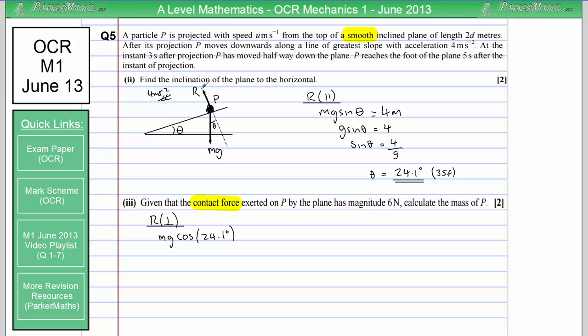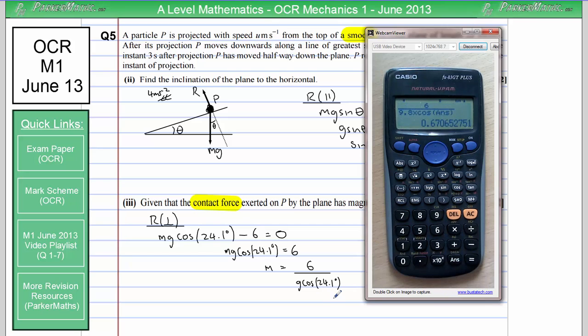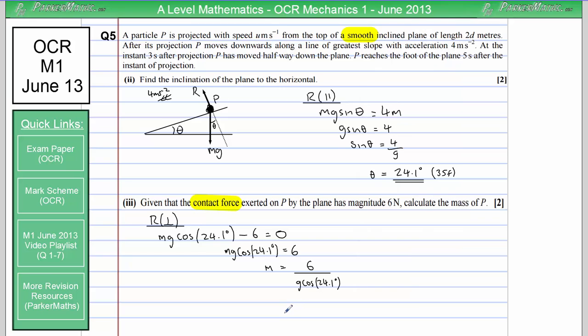We know this normal contact force R coming out of the slope is 6 so that's going to be minus 6 and we know that's going to be 0 because there's no acceleration perpendicular to the slope. The acceleration is down the slope. So from here we can do a little bit of rearranging and say that m g cos of 24.1 is 6 and if we divide through by g cos 24.1 we get m equals 6 over g cos 24.1 degrees. Now be careful here to use the exact value for this 24.1 that you calculated in this part of the question to avoid rounding error. And that gives us 0.671 kilograms to three significant figures.